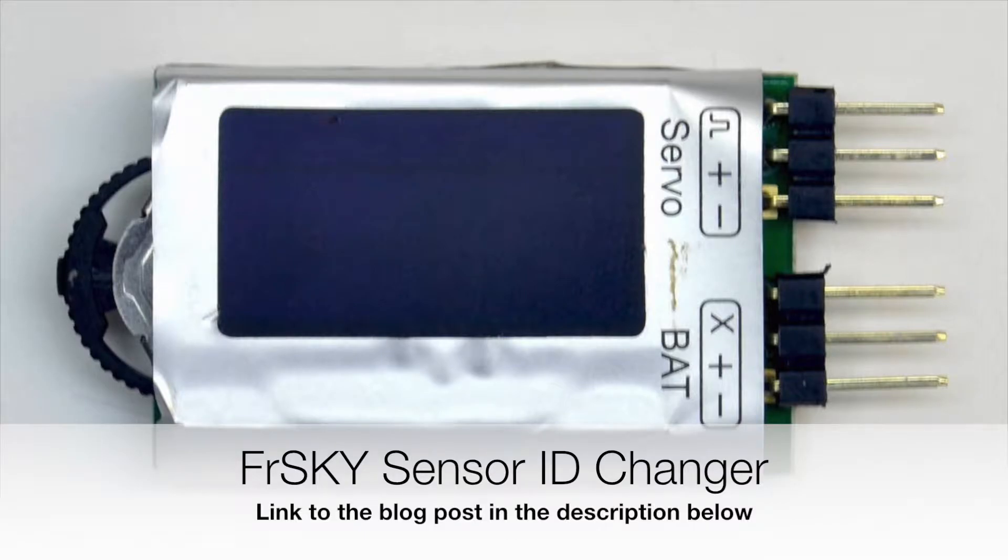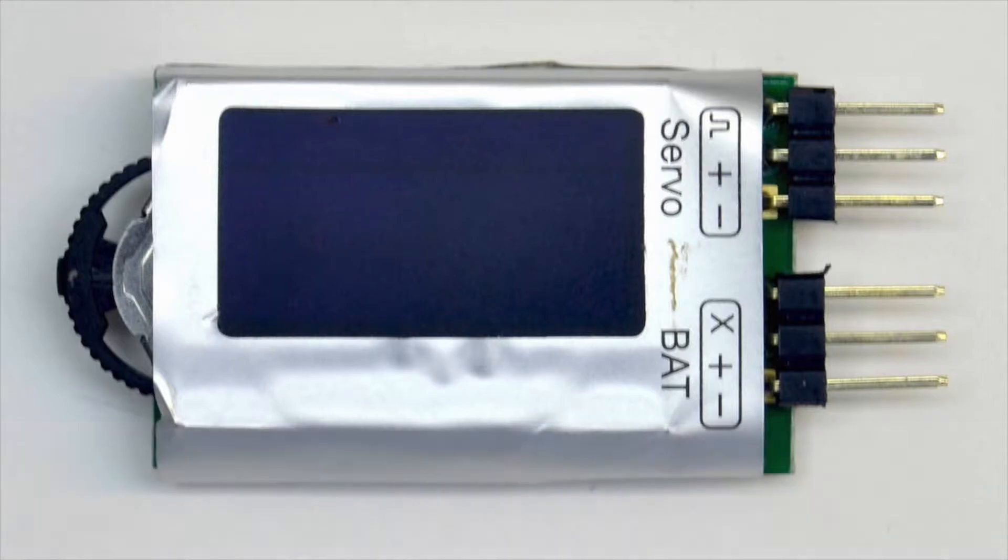Today we're going to take a look at the FRSKY sensor ID changer. The FRSKY sensor ID changer is used to change a sensor's ID.